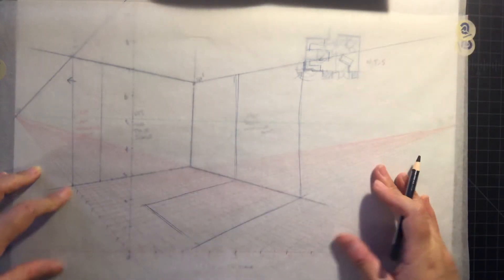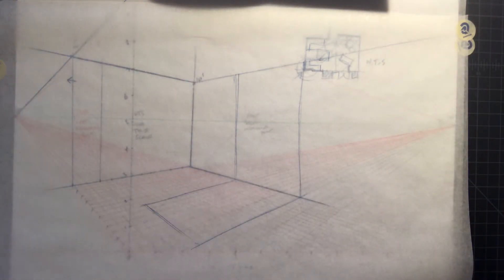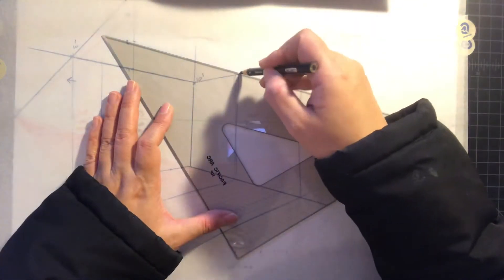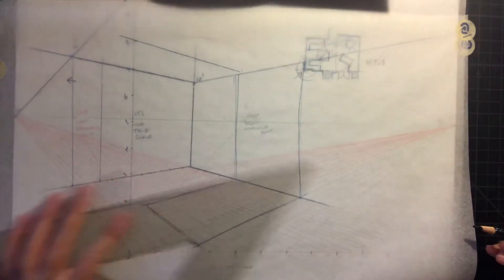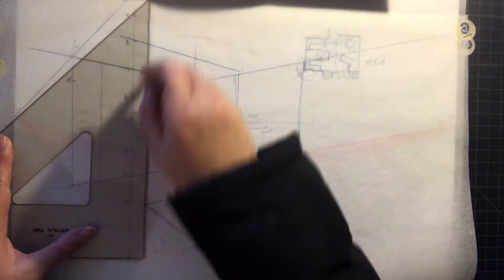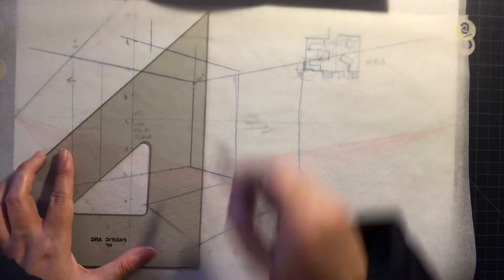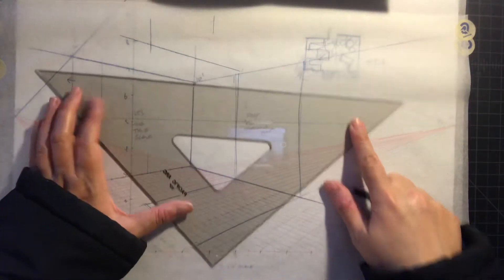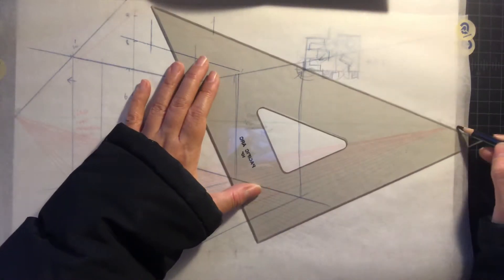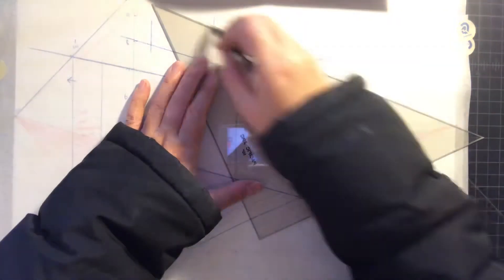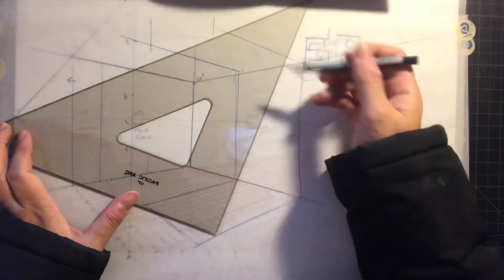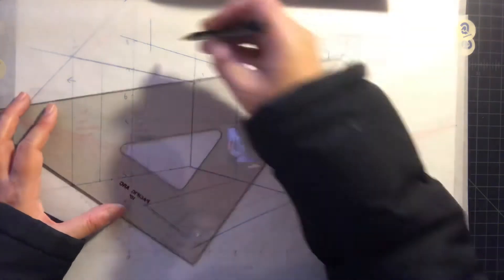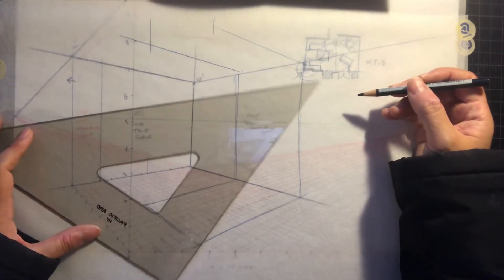So I do want it to make sure that it's correct going to the vanishing point and all that, and you got your measurements. Okay, so on this side right here if we pull it that way, we're gonna have to go all the way down first.